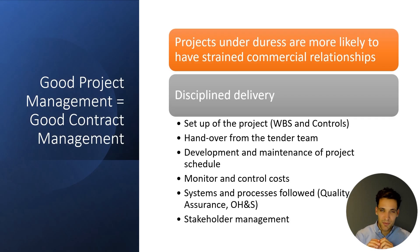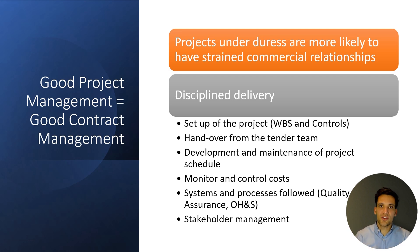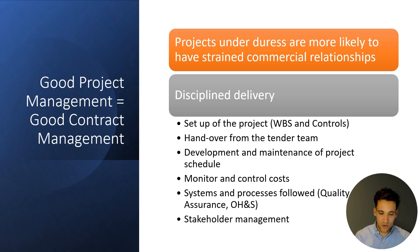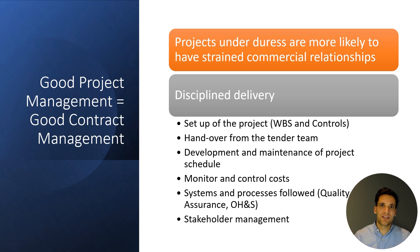The first tool, and by far the most important, is that good project management equals good contract management. Projects under duress are more likely to have strained commercial relationships. For example, if you're going over budget, you'll look for ways to save money — negotiating more aggressively on pricing with your supply chain, or hunting for variations in the head contract to claw back your profit margin. Effectively managing a project — the schedule, the budget — will inevitably lead to better contract management because the project runs more smoothly.